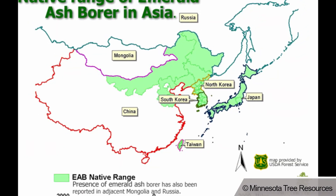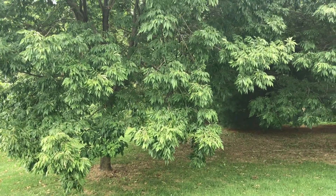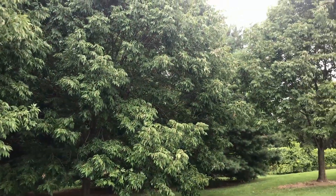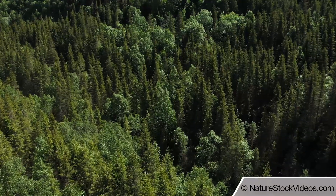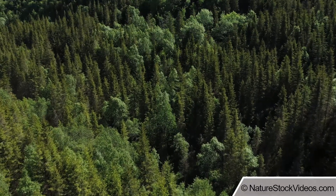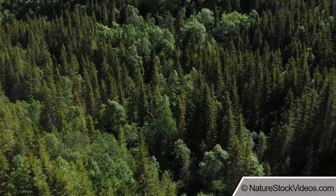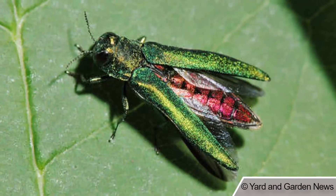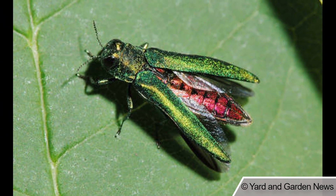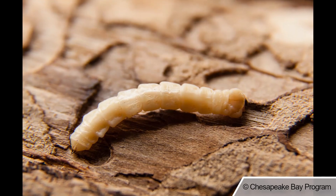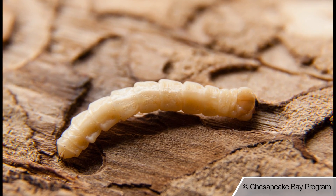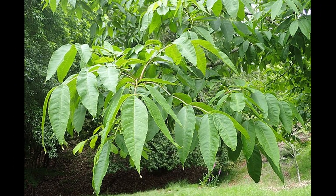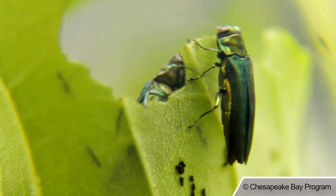The Ash Borer is native to Northeastern Asia. In its native range, it feeds on the wood and leaves of native ash trees like the Chinese Ash and the Manchurian Ash Tree. Since these species occurred together over long evolutionary time scales, the Chinese and Manchurian Ash Trees evolved some resistance to the Emerald Ash Borer. Also, EAB populations are kept in check in its natural range by native predators, so the bug usually doesn't kill or damage very many ash trees there — it's more of a slight annoyance than anything else.